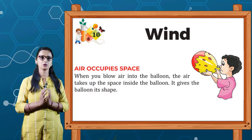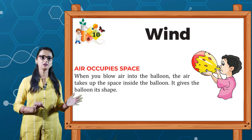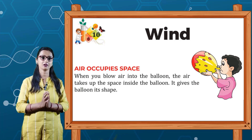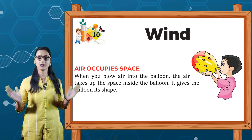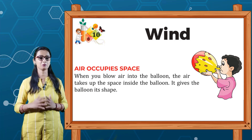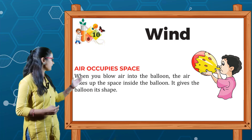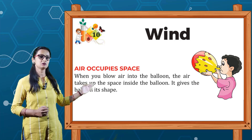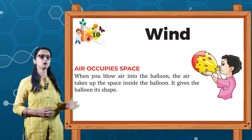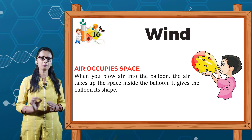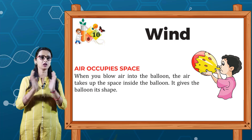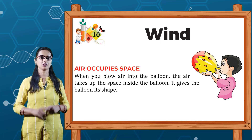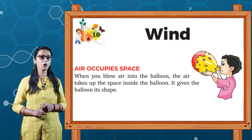Air is all around us. We cannot see or touch air, but we can feel it. Dekhiye bachon, jo hawa hai — air hai — woh hamare aaspaas hai, hamare charo taraf hai. But na to hum use dekh sakte hain, na hi use touch kar sakte hain — bas hum use feel kar sakte hain. Air occupies space. When we blow air into a balloon, the air takes the space inside the balloon and gives the balloon its shape. You can see that air occupies space.